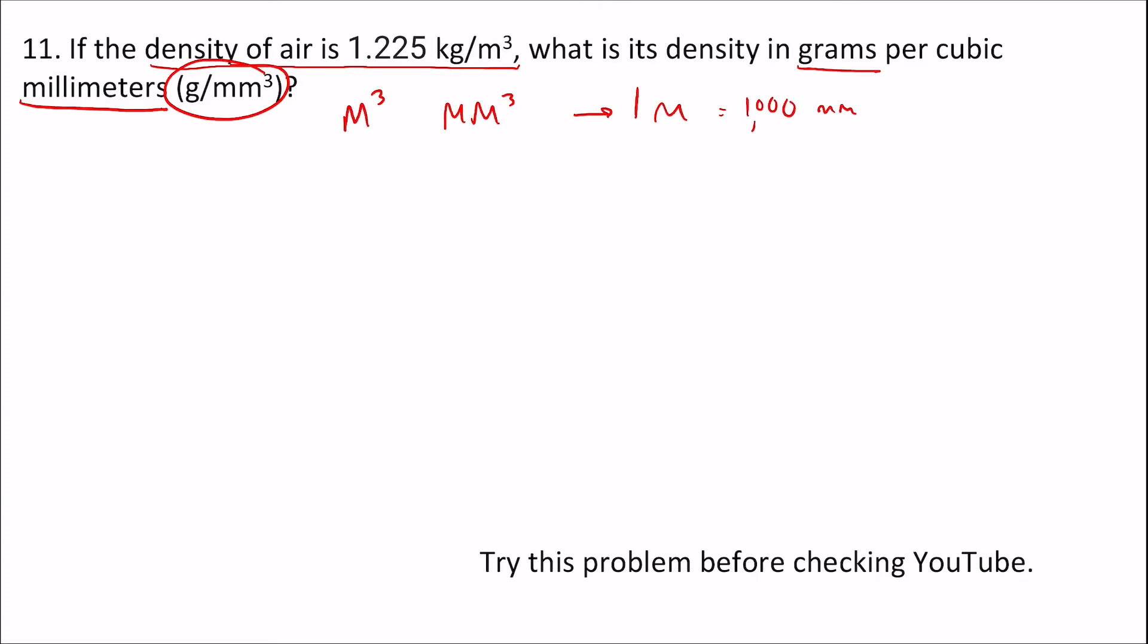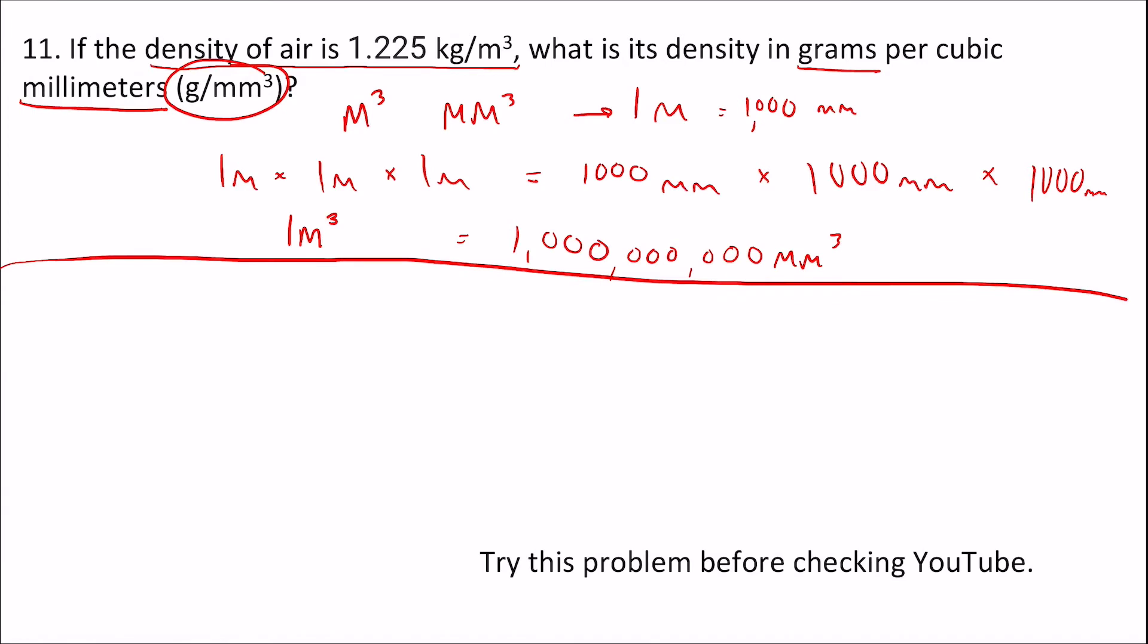So now to cube that, we basically do the same thing that we did in the last problem. We just say we have three of each, which is going to make this meter cubed equals one billion millimeters cubed. Now we solve the problem.